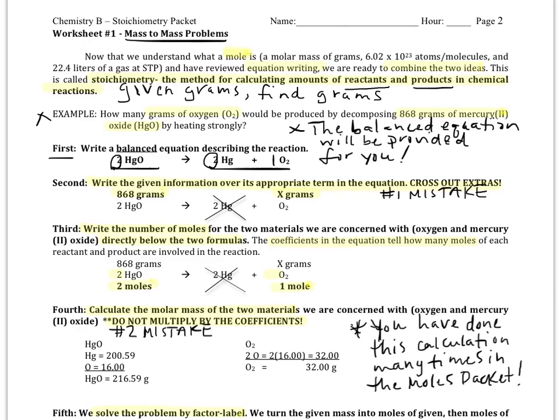So, once you have your balanced equation, your second step is going to be to pull information out of the problem. You are going to write that in this problem, they told us that we have 868 grams of mercury oxide. I'm going to write that over the mercury oxide in the equation. And in this problem, I'm asked to find grams of oxygen. So, I am going to write x grams over the oxygen. It's really important at this point that you cross out the extras.